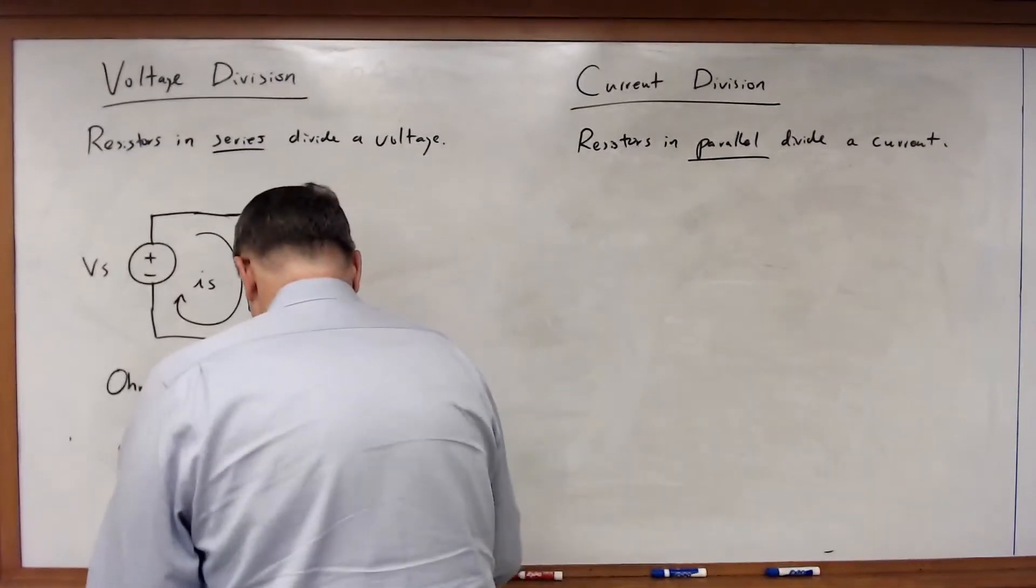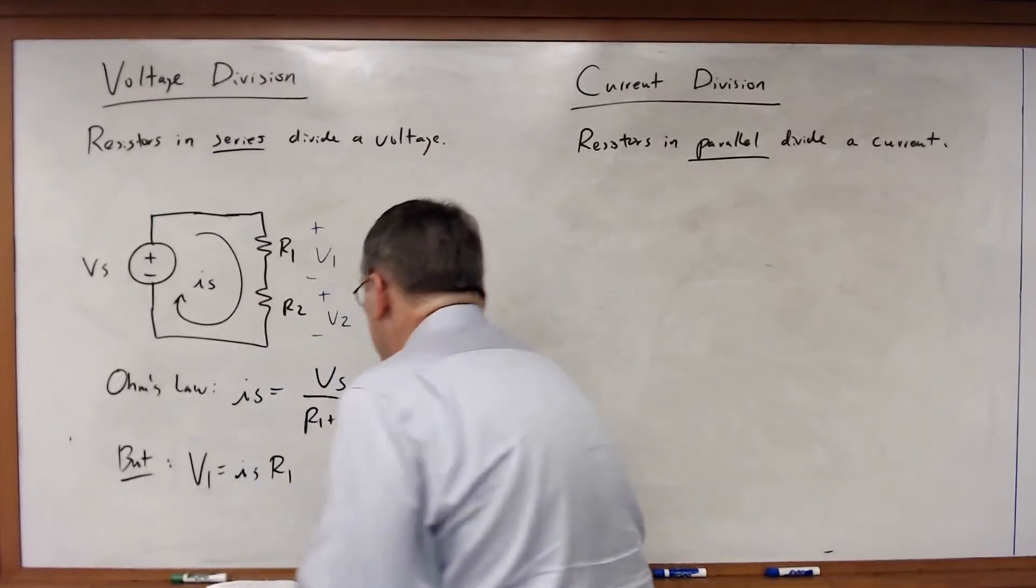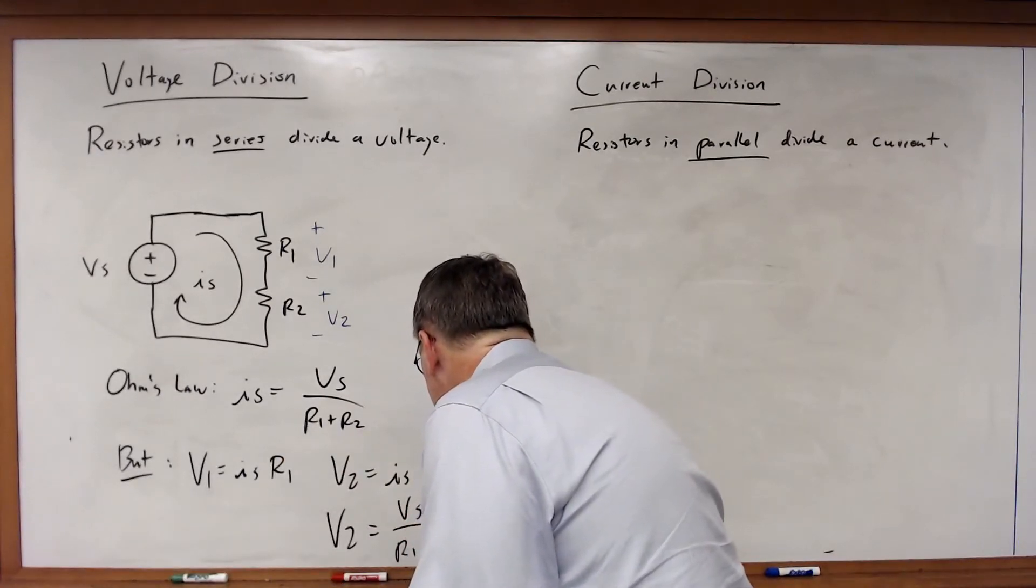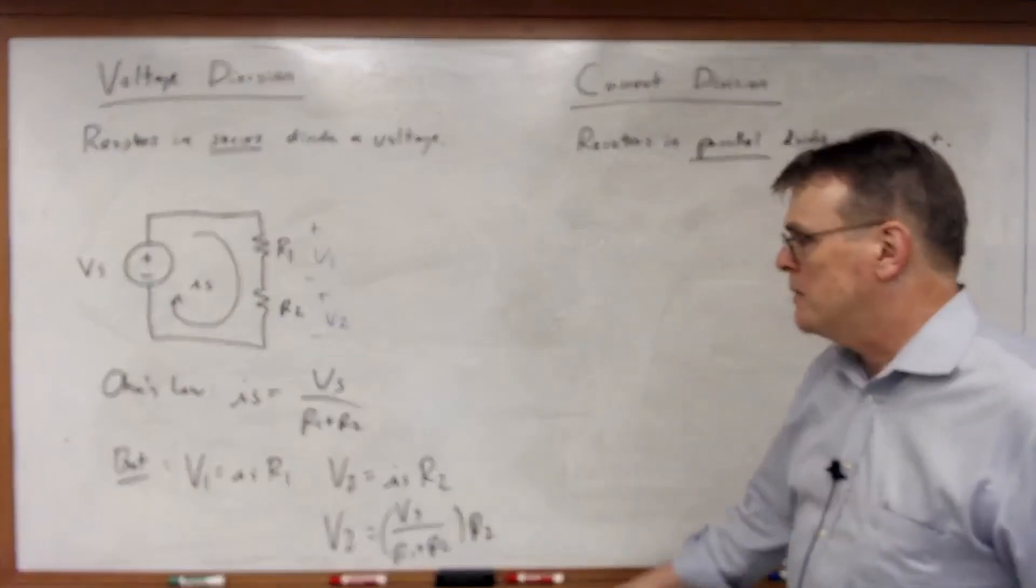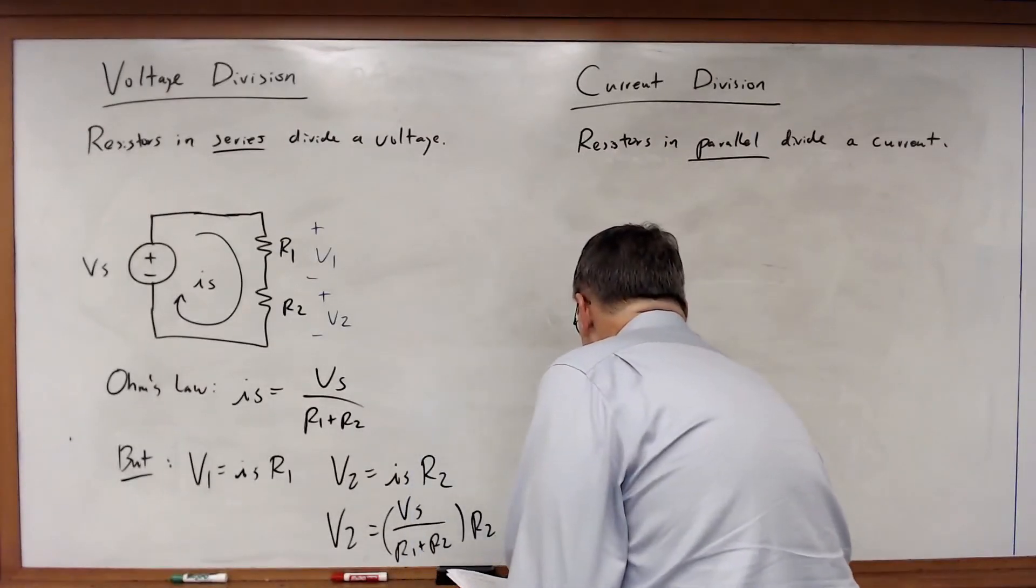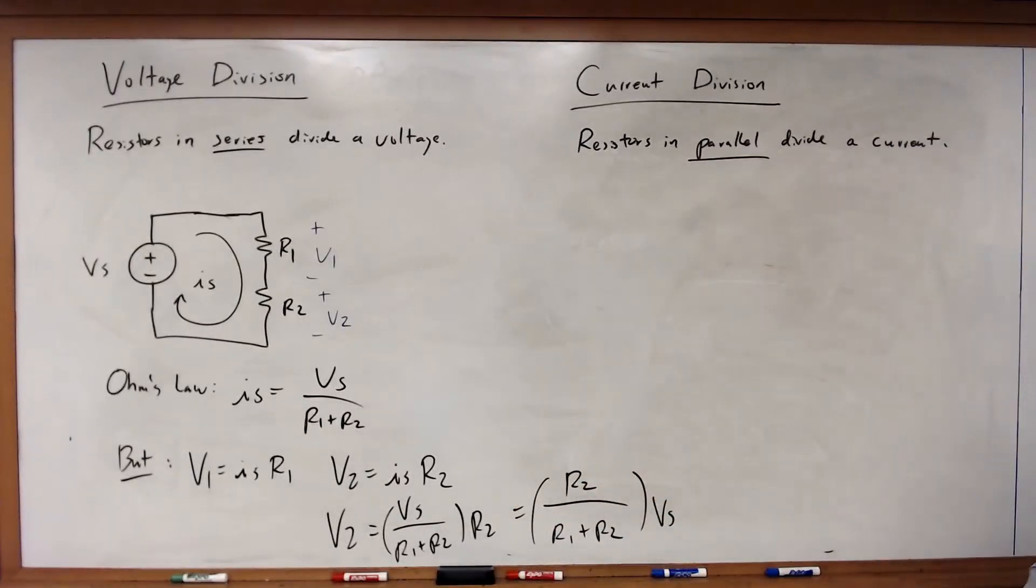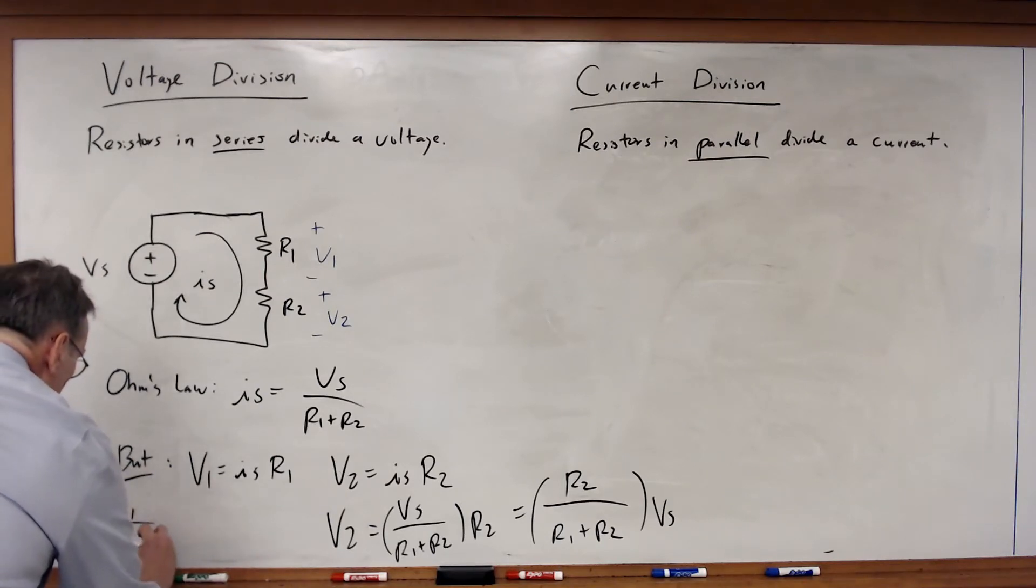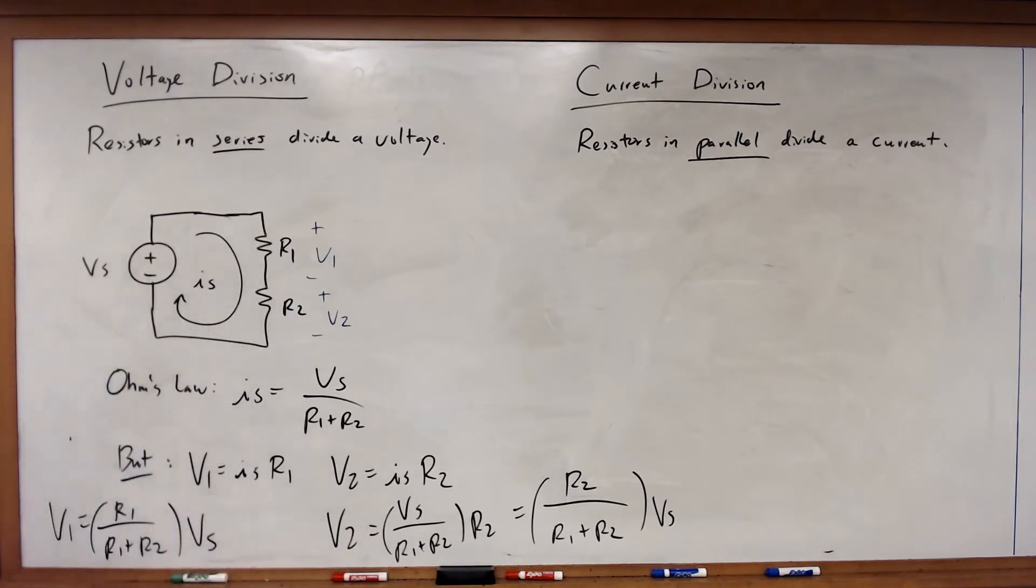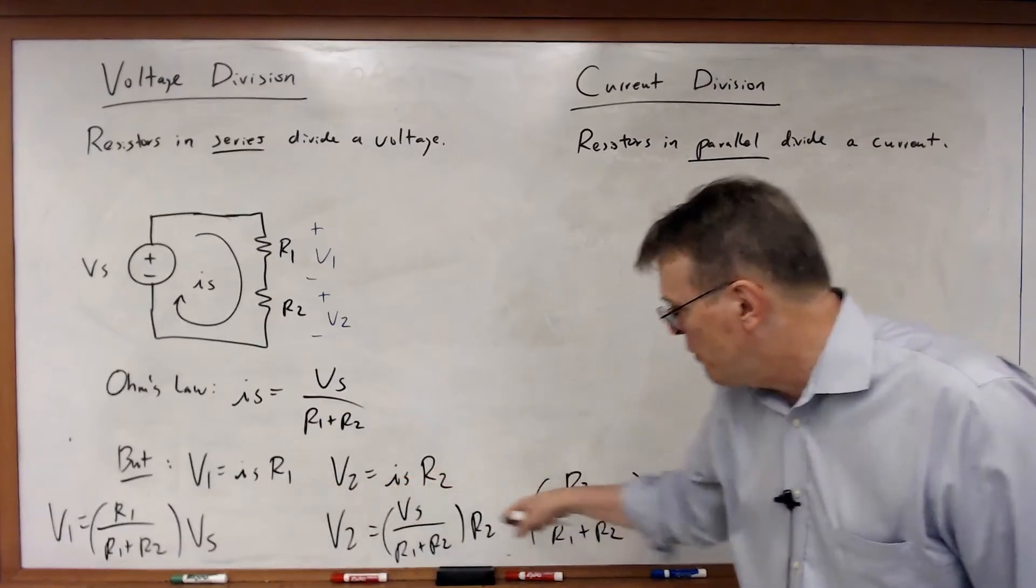So let's substitute one of these. What I get by substituting for IS is that V2 is equal to VS over R1 plus R2 times R2, or rewriting this, R2 over R1 plus R2 times VS. What about V1? I can also show that V1 is equal to R1 over R1 plus R2 times VS. Note if we add V1 and V2 together, we wind back up with VS.